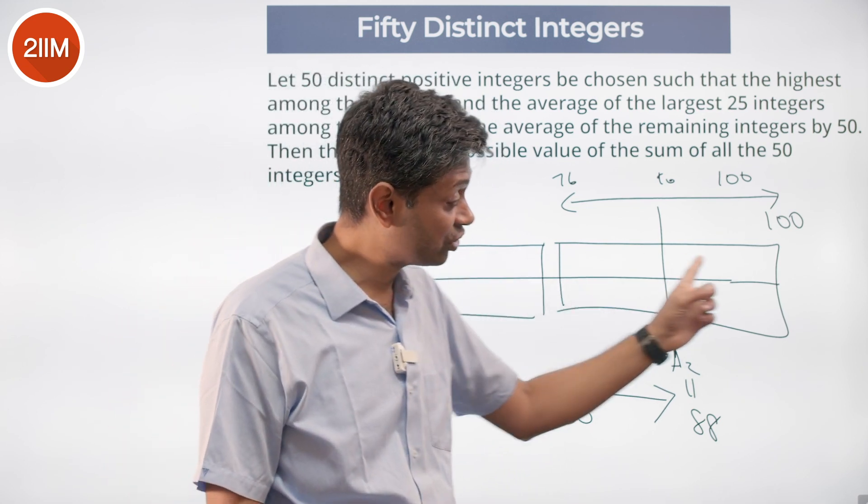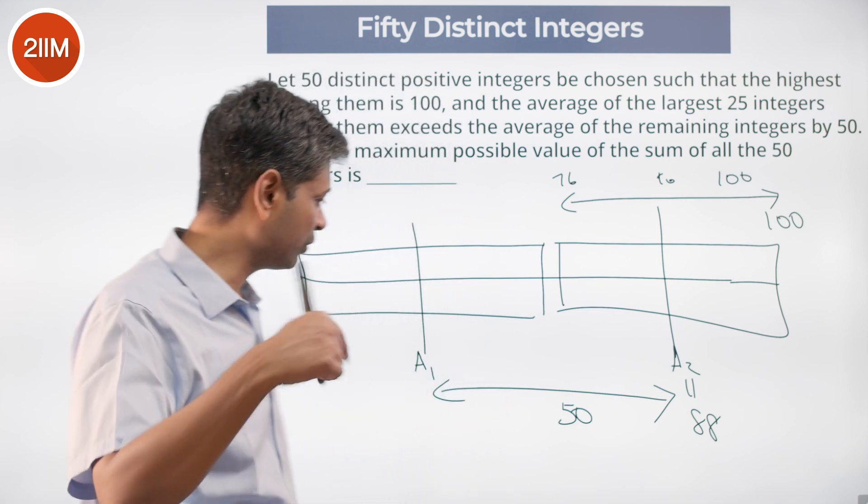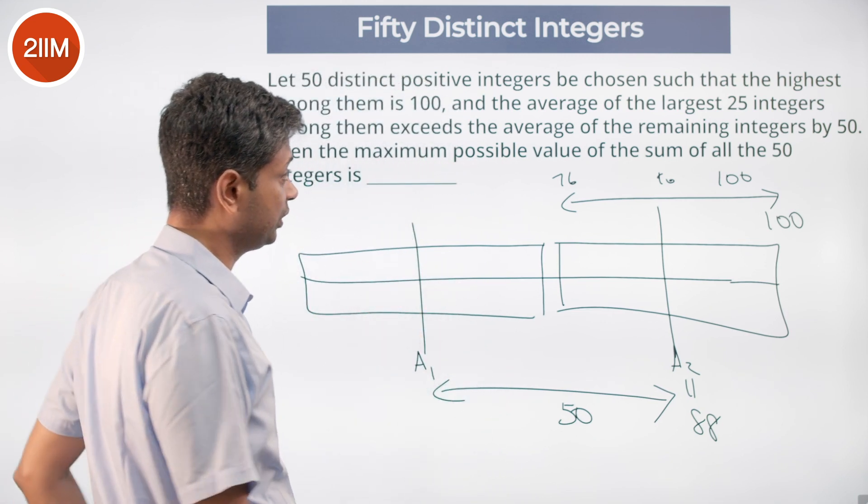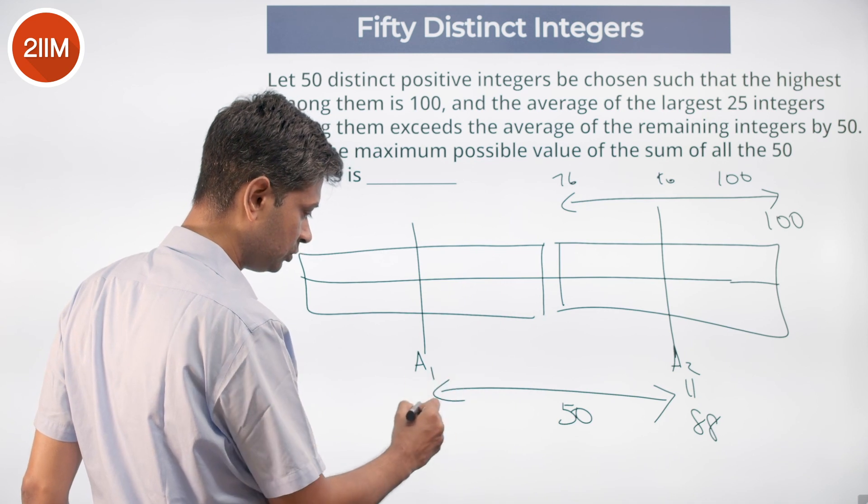Average of the 25 largest integers is 88. Average of the 25 smallest integers is 50 less than that, 38.